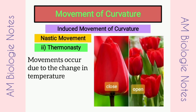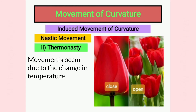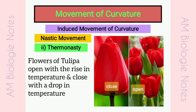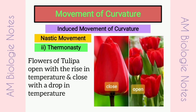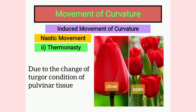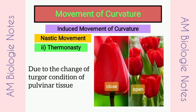Thermonasty: Such movements in plants occur due to the change in temperature. For example, flowers of Tulipa plants open with the rise in temperature and close with a drop in temperature. This is due to the change of turgor condition of pulvinar tissue.